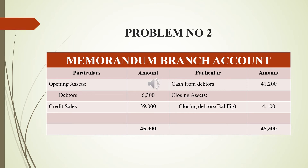We have to prepare a memorandum branch account. The opening asset — debtors — is 6,300 rupees, and credit sales are 39,000 rupees on the debit side.